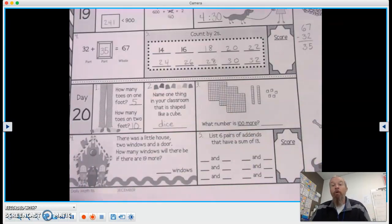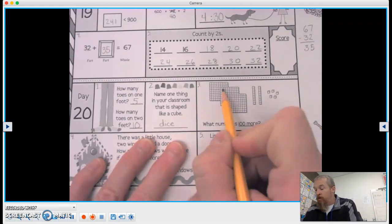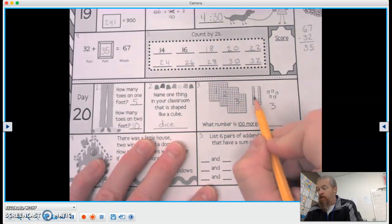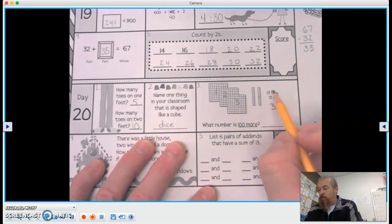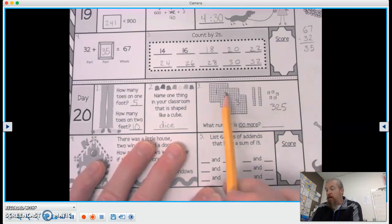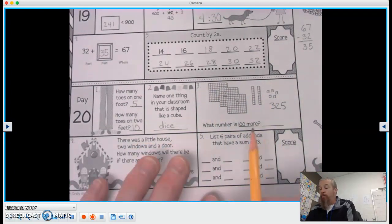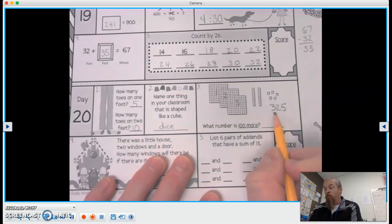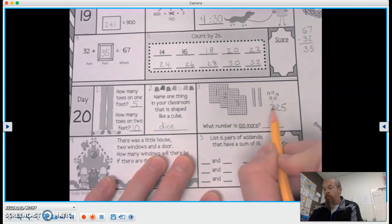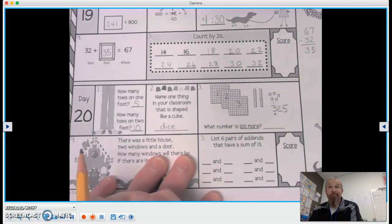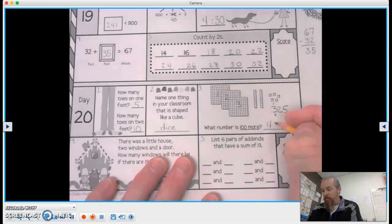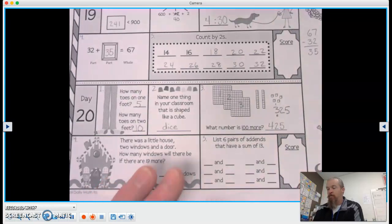What number is 100 more? So first we've got to figure out this number. So we have 100, 200, 300, 10, 20, 321, 22, 23, 24, 25. So this number is 325, but we want what number is 100 more than that? Well, what's the hundreds column? So what's 100 more than 300? Well, one more than three is four. So that number is 325, 100 more is 425. Very good.